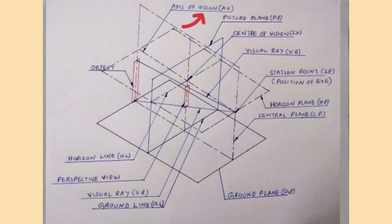Axis of vision is the line perpendicular to picture plane and passing through the station point. Center of vision is the point through which the axis of vision intersects the picture plane.